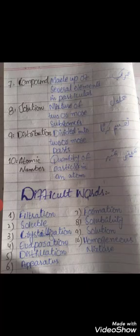The difficult words are: number one, filtration; number two, soluble; number three, crystallization; number four, evaporation; number five, distillation; number six, apparatus; number seven, formation; number eight, solubility; number nine, solution; and number ten, homogeneous mixture.